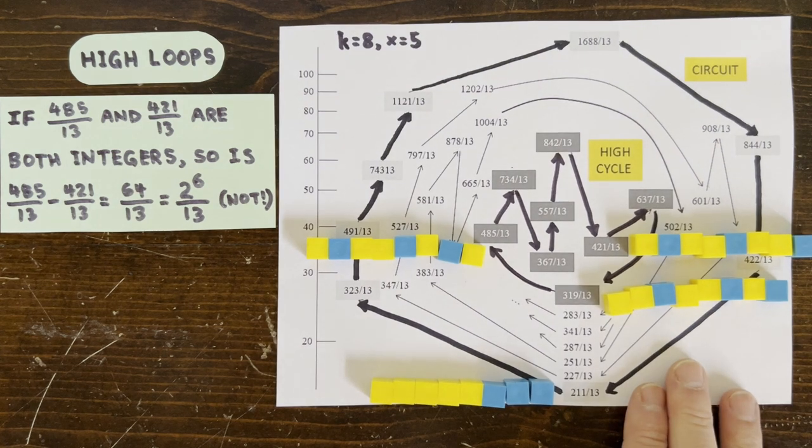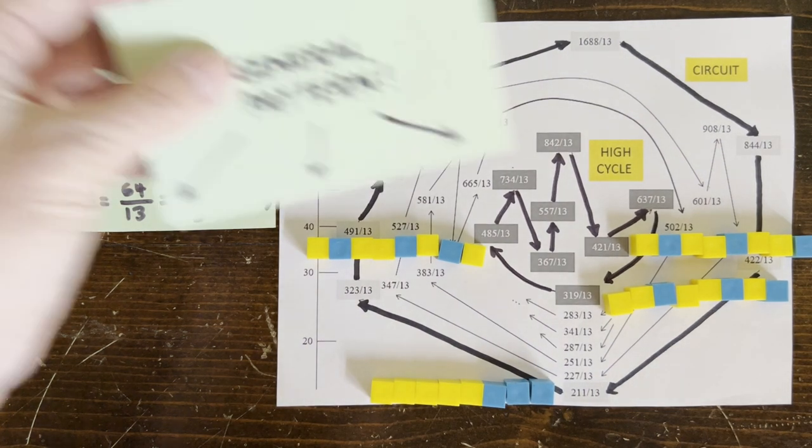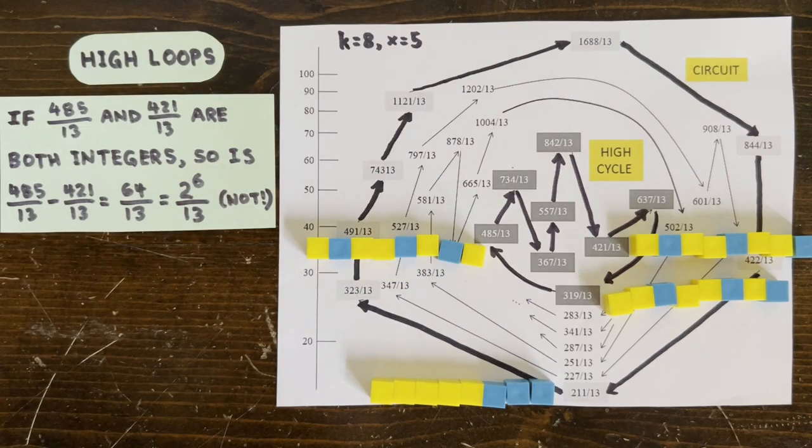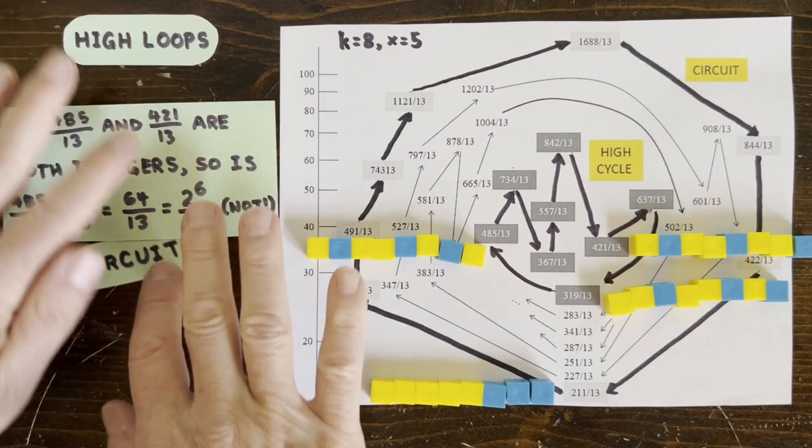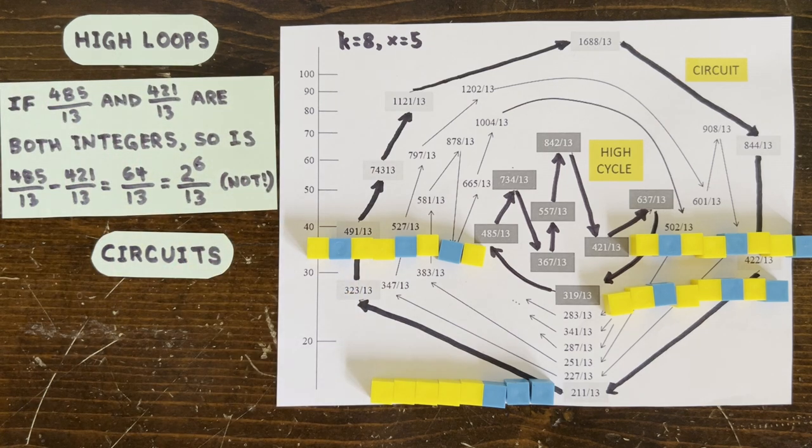Now it turns out there's a simple reason behind all three of these types of loops not being 3n plus 1 counterexamples. So to see why, let's apply our high loop trick back to the circuit loop.